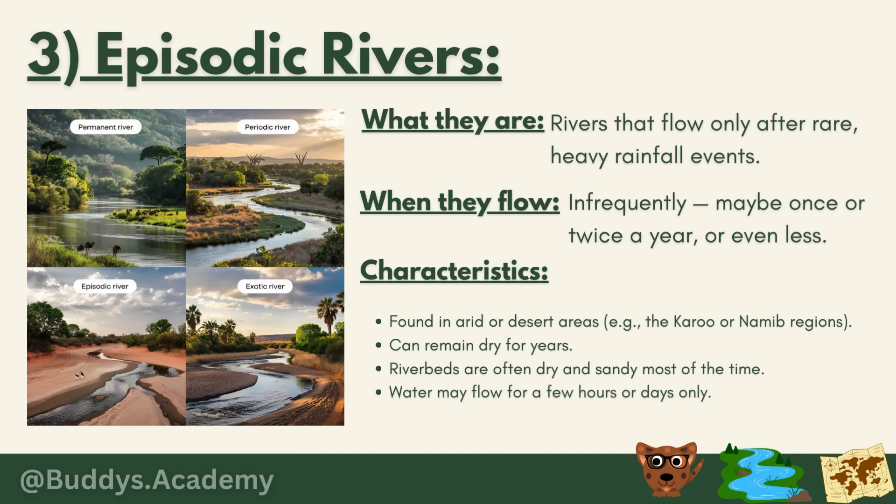Episodic rivers are rivers that flow only after rare, heavy rainfall events. These rivers can literally remain dry for years, because the key word is rare, heavy rainfall. Once it rains again, the river will flow — but only for a few hours or a few days, not indefinitely.